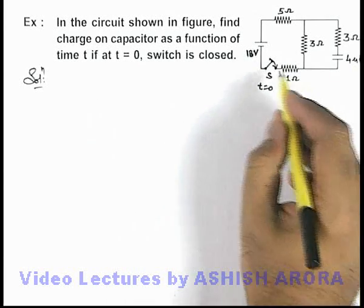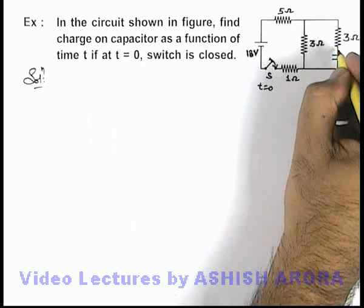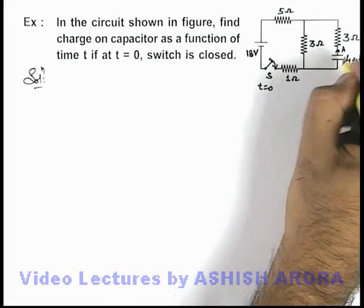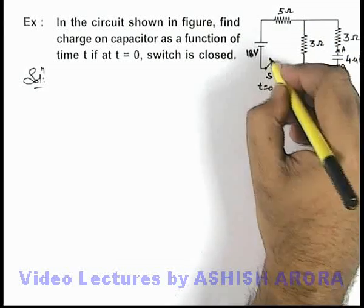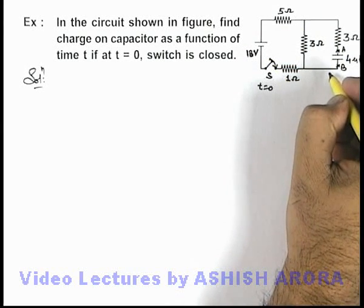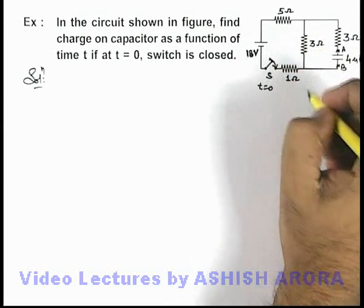I feel the simplest way out is by removal of capacitor across the terminals A and B. We transform the remaining circuit in form of the equivalent Thevenin's battery and its internal resistance.